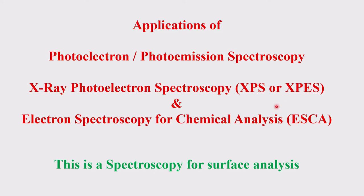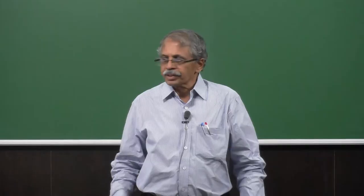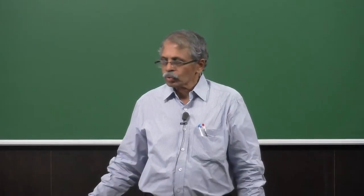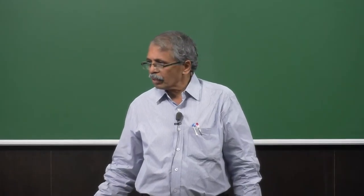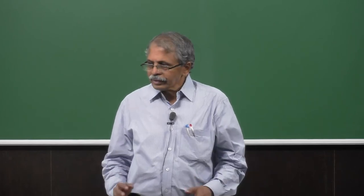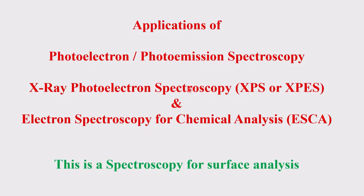Photoelectron spectroscopy has a couple of different names based on the source used: X-ray photoelectron spectroscopy where you use X-ray as the source, or UVPS using ultraviolet radiation. In its initial stages it was developed as electron spectroscopy for chemical analysis (ESCA). All of this is concerned with surface analysis — it is a spectroscopy meant for surface analysis, also referred to as XPS.